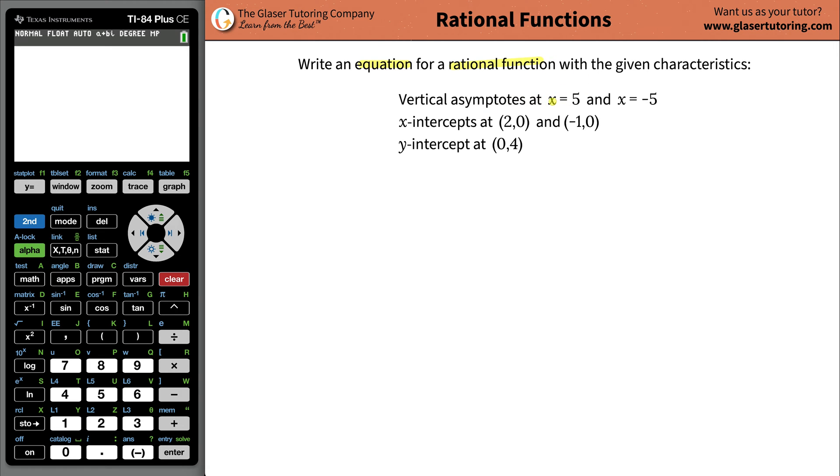We have vertical asymptotes at x equals 5 and x equals negative 5. We have x-intercepts at 2 and negative 1, and we have a y-intercept at 4, basically.